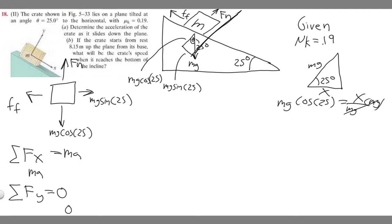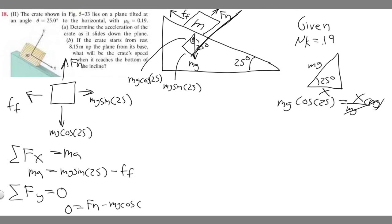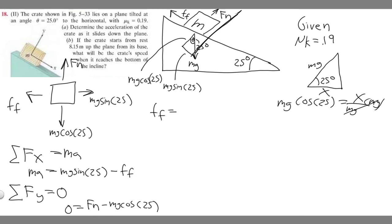For the x-direction: mg sine 25 is positive (down the slope) and the friction force F_f is negative (opposing motion). So: mg sin 25 − F_f = ma. For the y-direction: F_n (up) minus mg cosine 25 (down) equals zero. We also use the friction formula: F_f = mu_k times F_n.